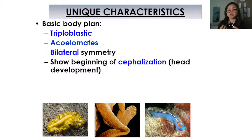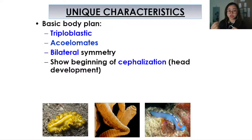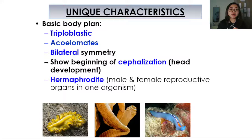As we go through the next few phyla, you're going to know this word more — cephalization. When an organism starts to form a head or a structure that looks like a head, that is called cephalization. Usually this is also followed by the development of an increasingly complex nervous system. So it also has some simple nervous systems.